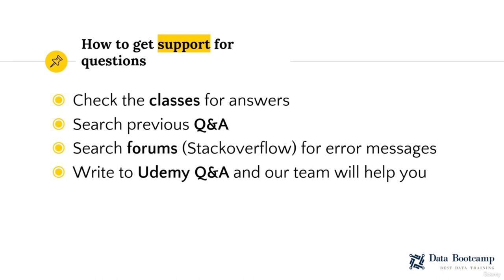If you do not find a solution, we recommend accessing the questions and answers section of the course. You can find questions from other students who have had similar doubts and already asked their questions, along with answers from other students and solutions we have provided. It is very likely that your question is already in that forum with a solution. We also recommend that you search the forums. For code errors, it is faster to copy the error message — usually the last lines — and search for it on specialized forums such as Stack Overflow. We are sure you will find your question with possible solutions there.